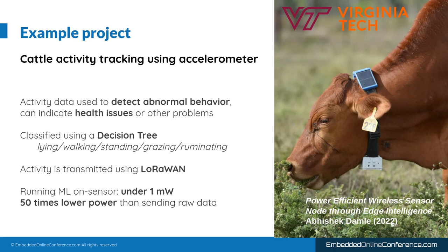These categories are very compact and can be transmitted over LoRaWAN, and this data over time can be used to detect abnormal behavior which can indicate that there are health issues, external threats, or stressors. In this project they found that running the machine learning model directly on the sensor uses 50 times less power than transmitting the raw data, giving a huge increase in battery life.